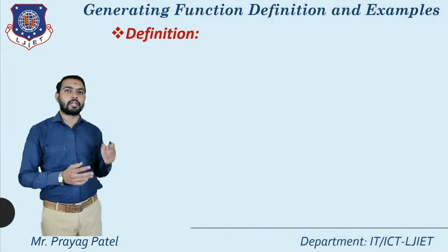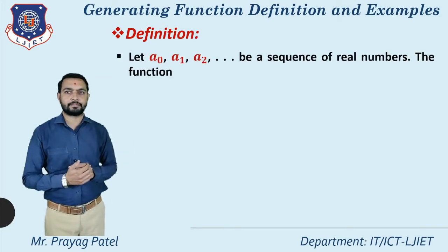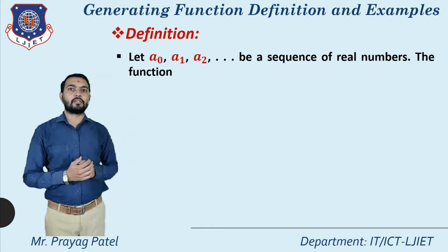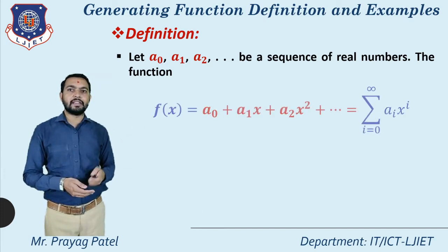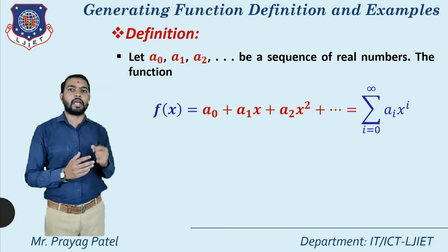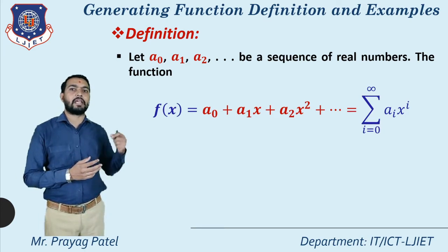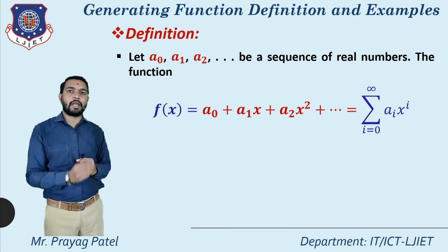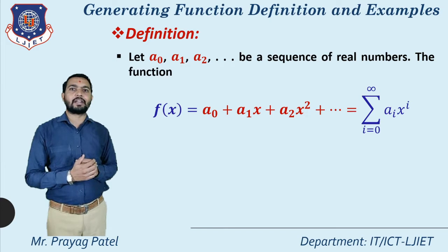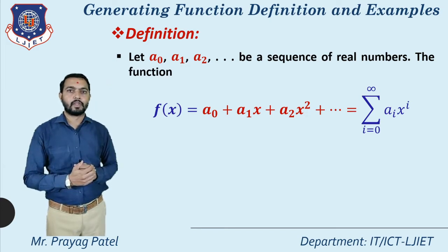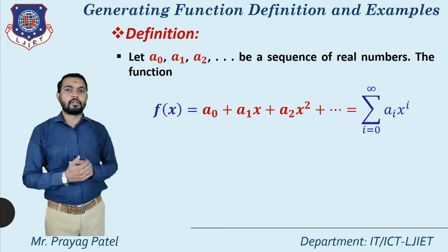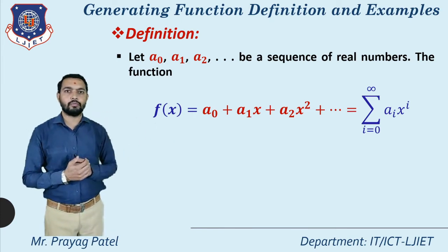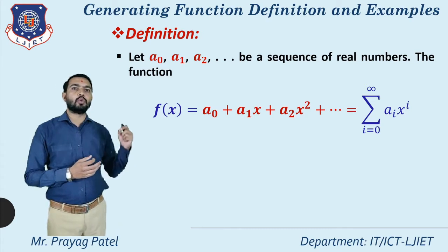First, what is the generating function? Let a0, a1, a2 be a sequence of real numbers. Then the function f(x) = a0 + a1·x + a2·x² + a3·x³ and so on. The common equation is f(x) = Σ (i=0 to ∞) aᵢ · xⁱ.